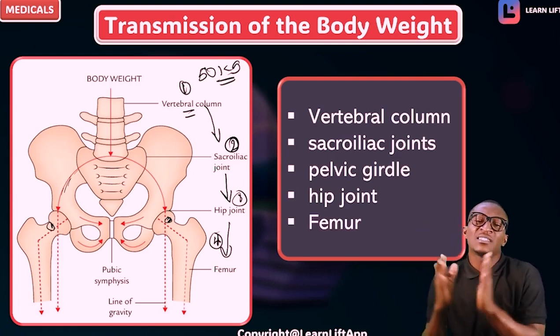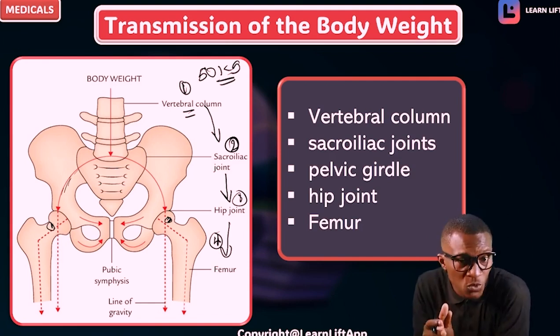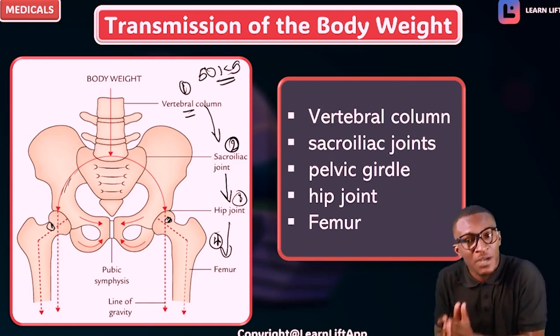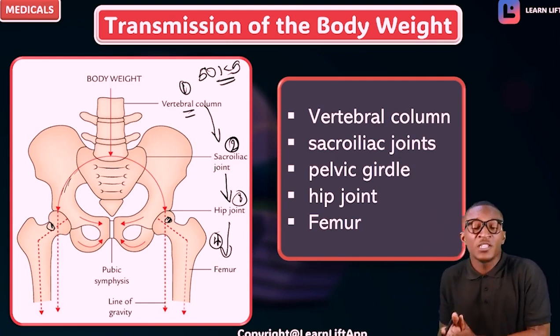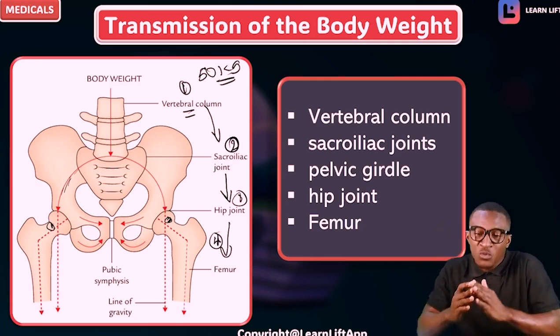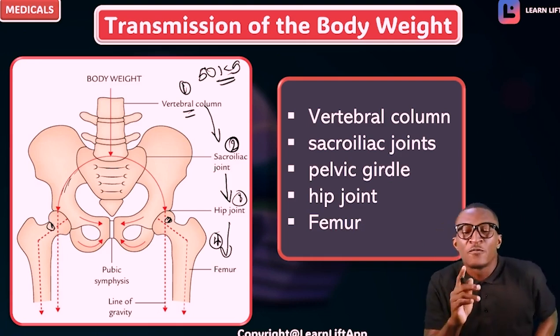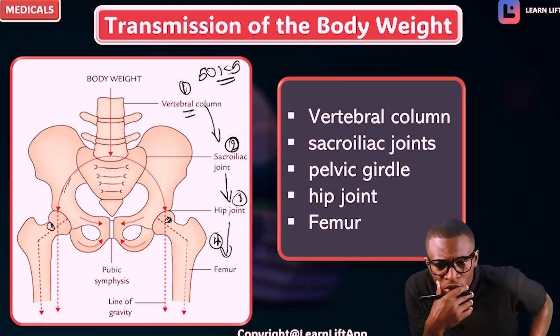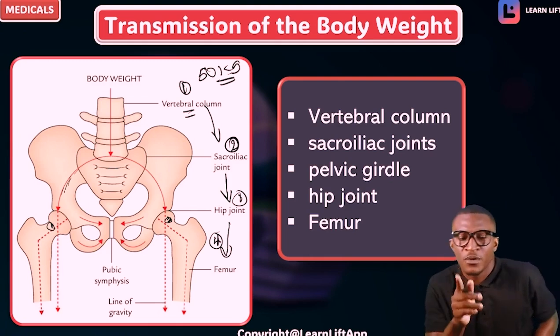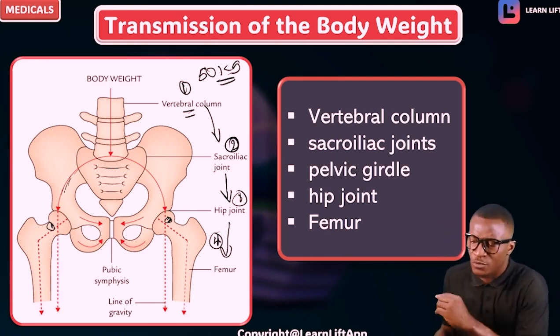Do you understand the transmission of body weight? We started from the vertebral column — how the weight is borne at the vertebral column — then from the vertebral column to the sacroiliac joint, and it spreads within the girdle. From the girdle it goes to the hip joint, and from the hip joint it goes to the femur.